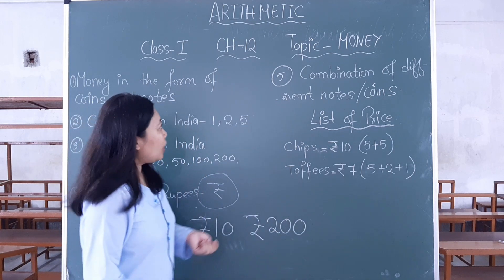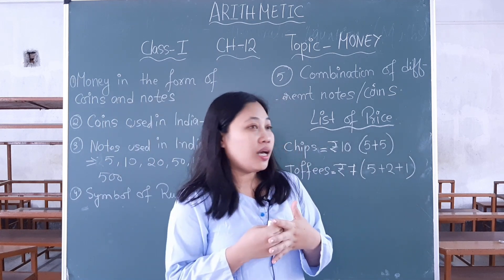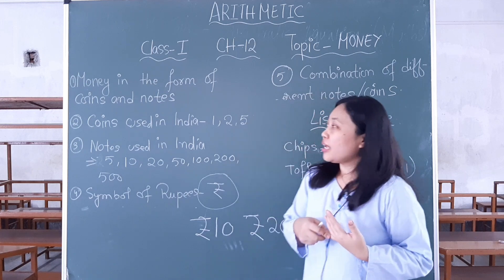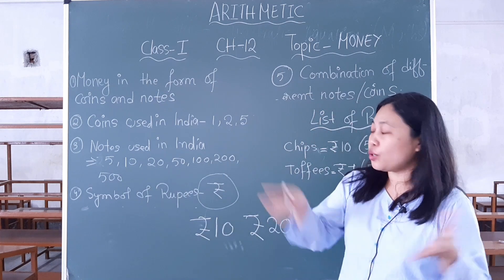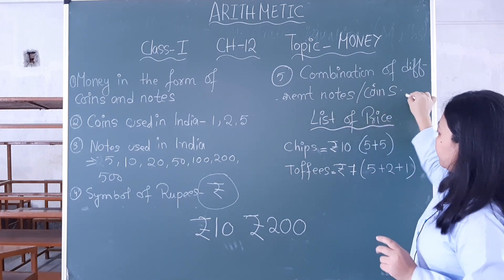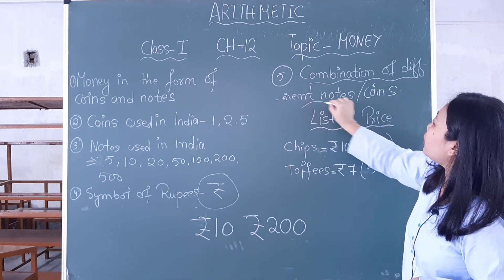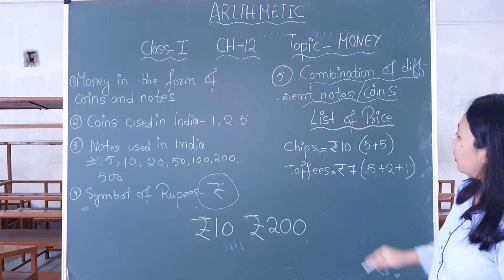Money is used for buying clothes, chocolates, playing toys, and so on. Now how can we combine different notes? You can see here number 5 point: combination of different notes or coins.